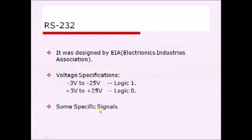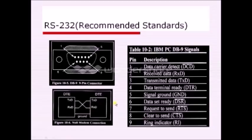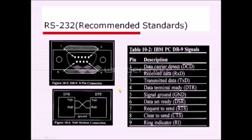RS232 specifies nine signals: Data Carrier Detect, Receive Data, Transmitted Data, Data Terminal Ready, Signal Ground, Data Set Ready, Request to Send, Clear to Send, and Ring Indicator. In asynchronous serial communication, we use only three of these pins: Receive Data (RxD), Transmit Data (TxD), and Signal Ground.